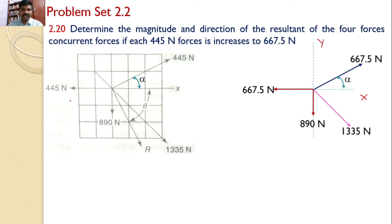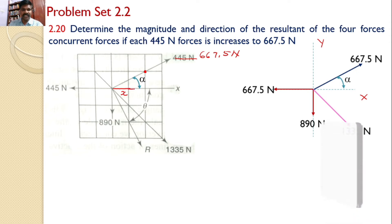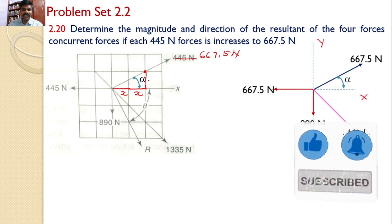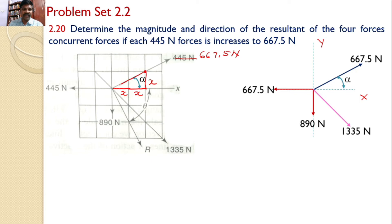To find alpha, let us consider the graph given in the problem. This 667.5 Newtons force intersects the graph sheet. Taking each grid square as one unit, let this value be X — so the horizontal distance is 2X and the vertical distance is X. Constructing a right angle triangle, tan alpha equals X divided by 2X, which gives alpha equal to 26.56 degrees.